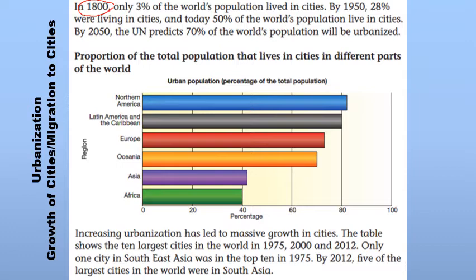It is expected that 70% of people will be living in cities within 30 years from now. The reason is that cities offer better social conditions, better education, health facilities, safety and security, and better economic earning opportunities. The bar graph shows the percentage of people living in cities on the horizontal axis and different regions of the world on the vertical axis.